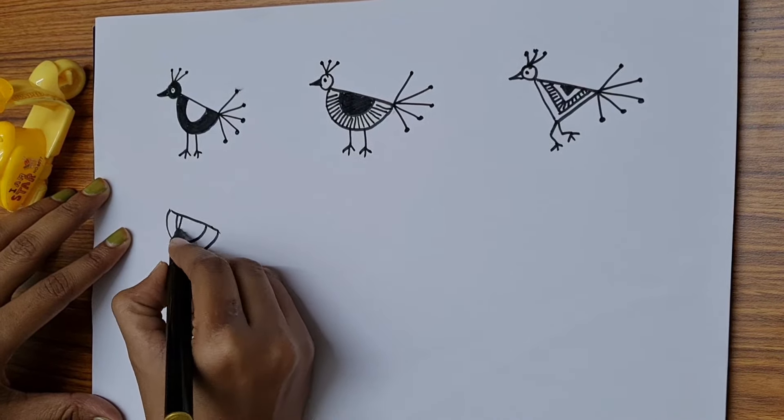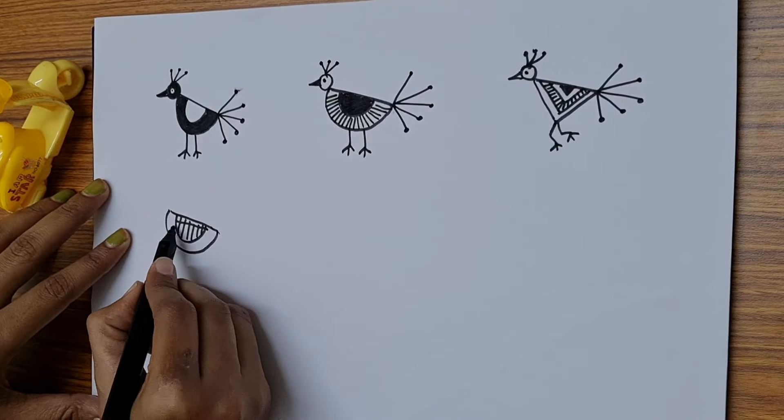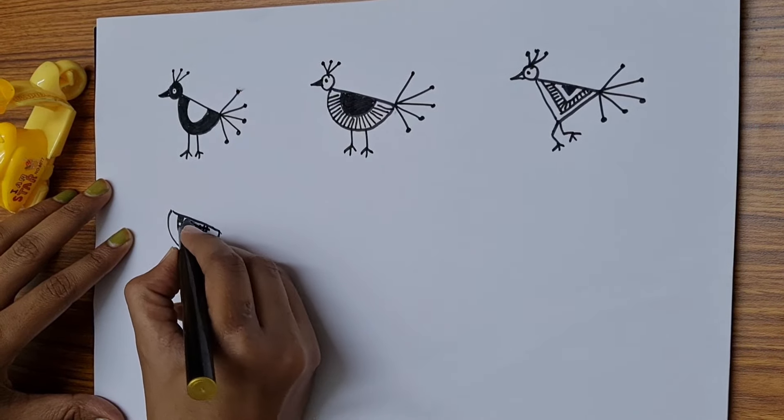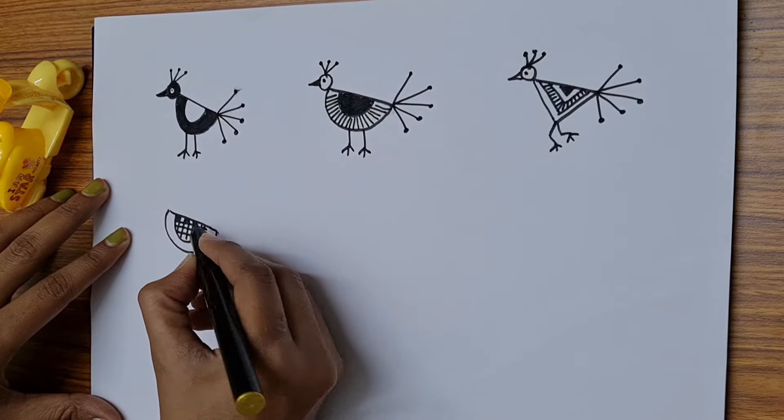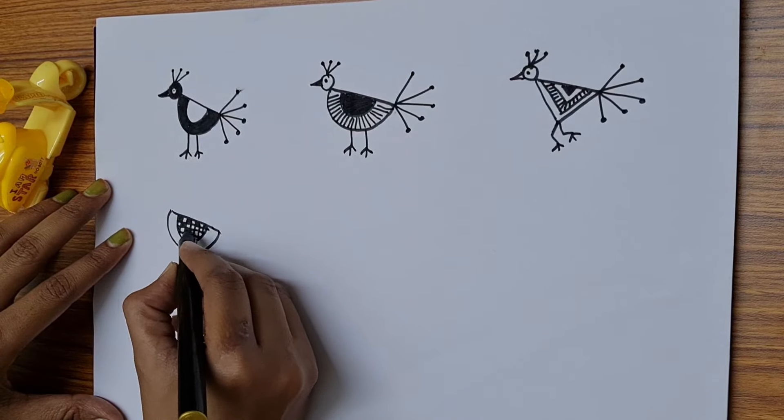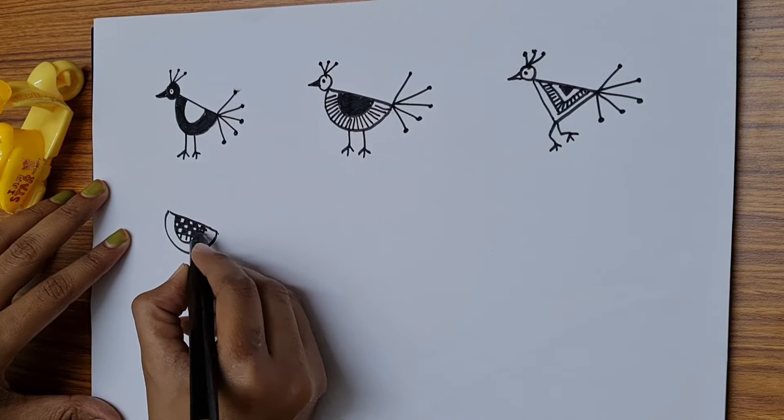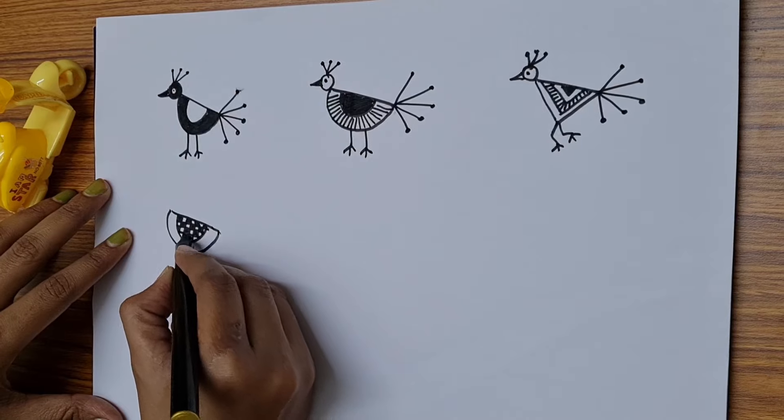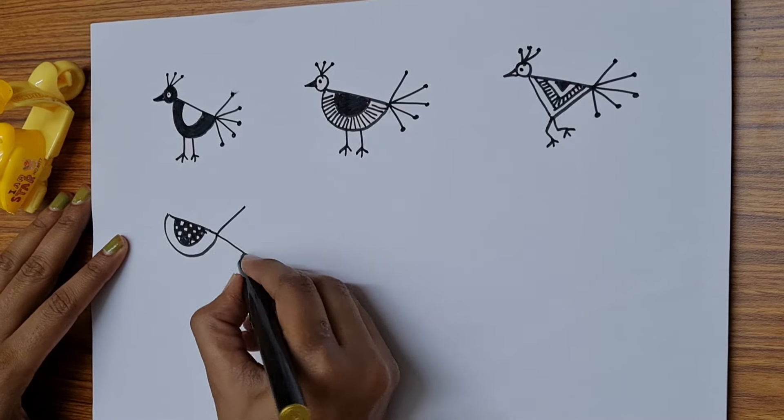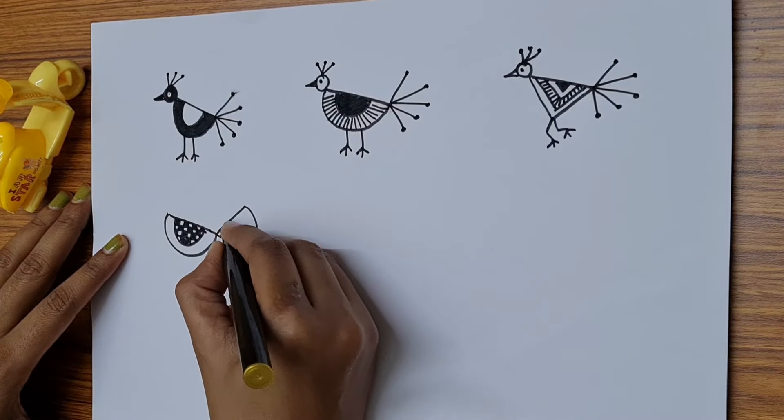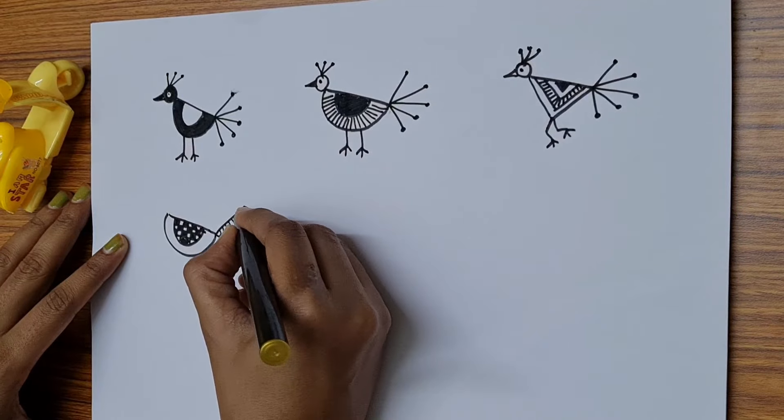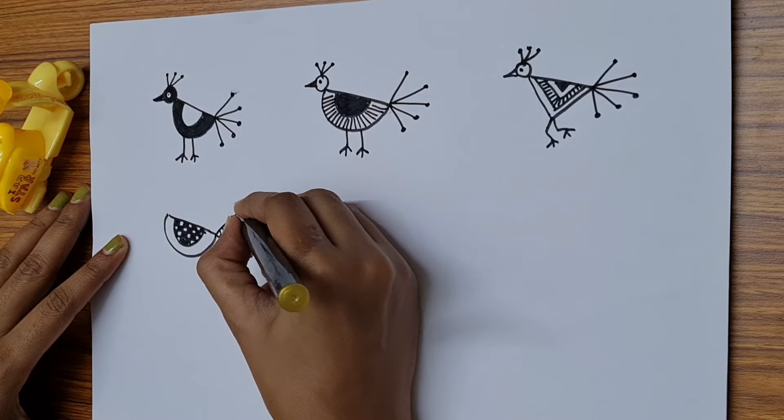These three are the simplest peacocks. We can move on to a bit complex peacock. This also will fall under the simplest. The only thing is the inner portion you can go with whatever shading you wanted to. These type of shadings will take time but the result will be as beautiful as you can see.